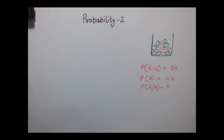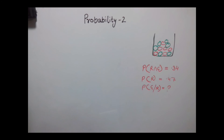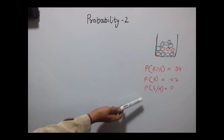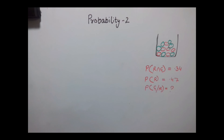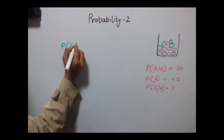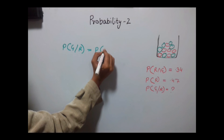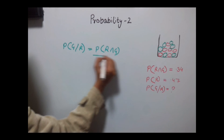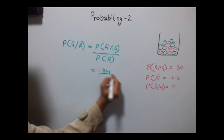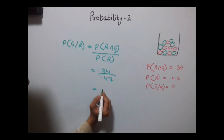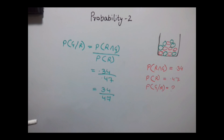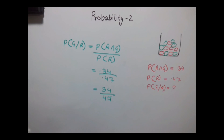In the next question, it is given that the probability of picking a red and green marble is 0.34, and the probability of picking only a red marble is 0.47. We need to find the probability of picking a green marble when a red marble has already been picked. Putting values in the formula: P(green|red) = P(red∩green) / P(red) = 0.34 / 0.47 = 34/47. For more tricks, login to indiaedu.com.